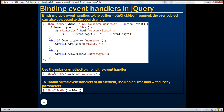Now, how do you unbind an event handler? Use the unbind method. When we call the unbind method passing 'mouseover', it's going to unbind the mouseover event handler. And if you want to unbind all event handlers of that button element, simply call unbind without any parameters — this removes all event handlers.